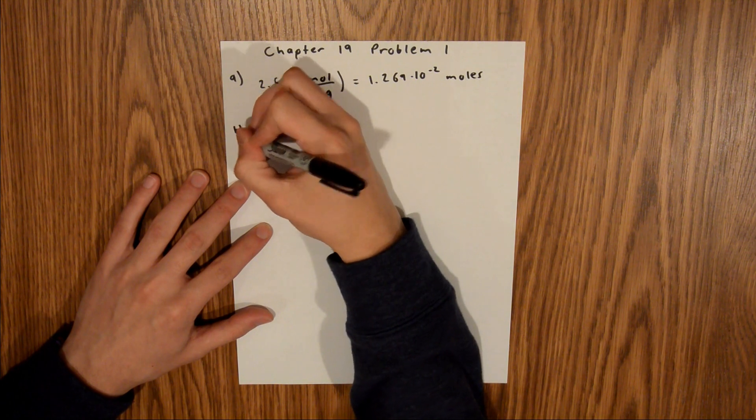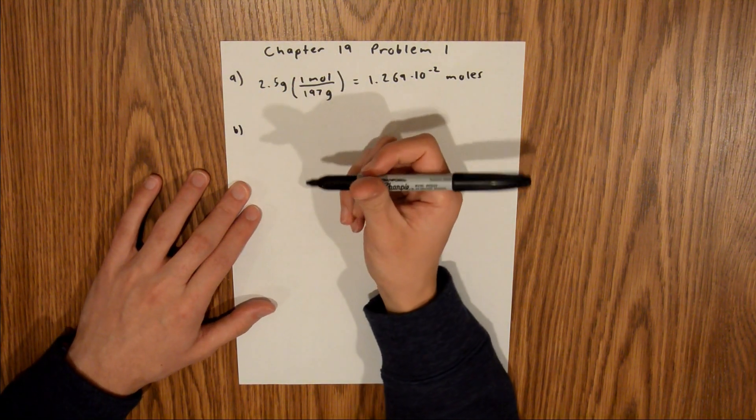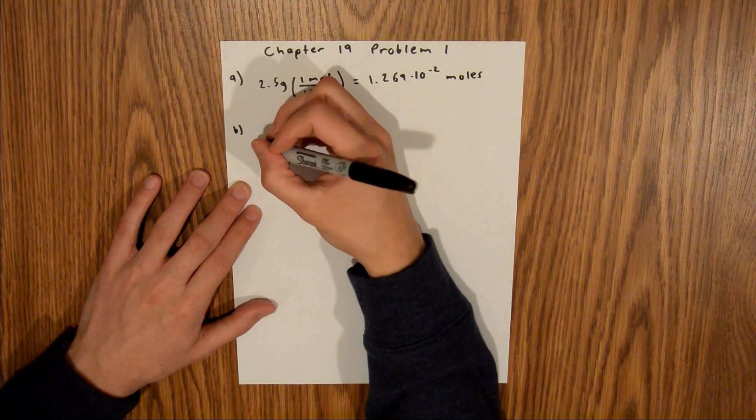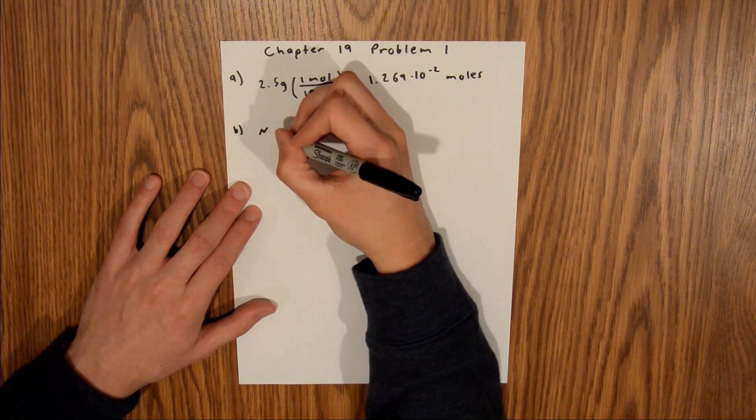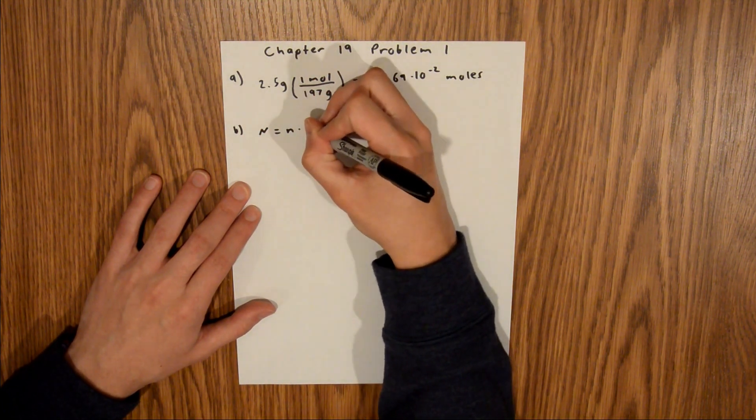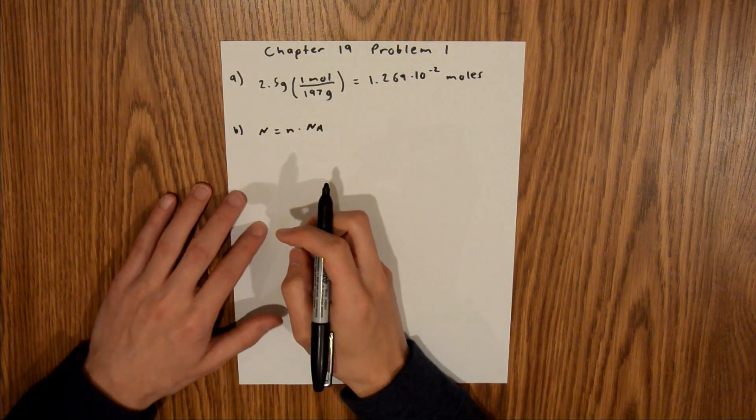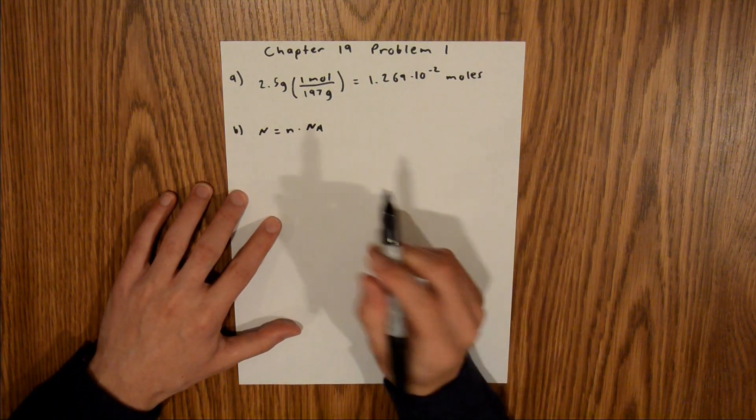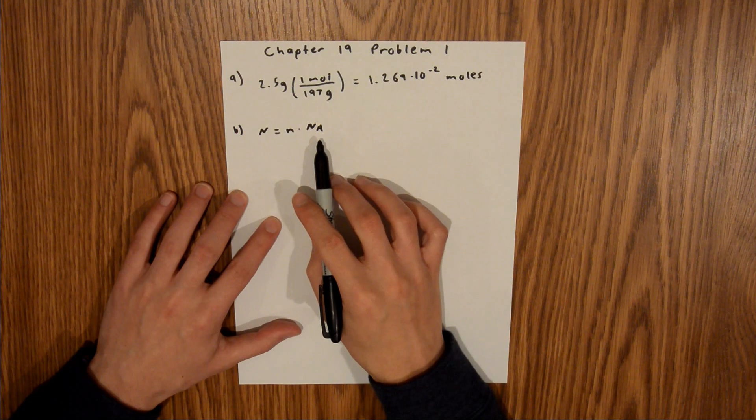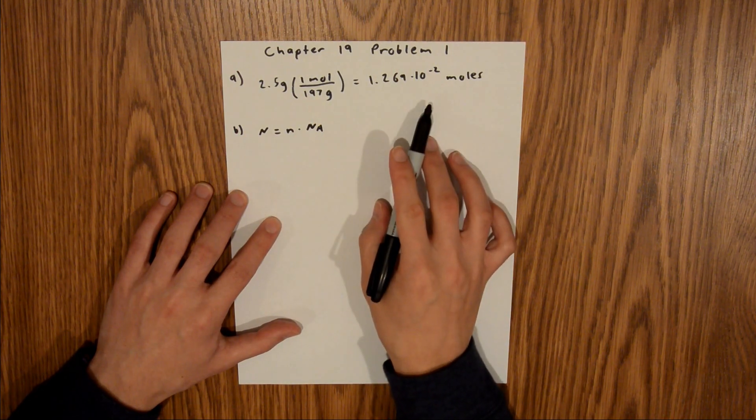And for Part B, we want to know how many atoms are in that sample. And so, we know that the number of atoms is equal to the moles times Avogadro's number. And both of those values we know. Avogadro's number is a universal constant, and the moles we just found in Part A.